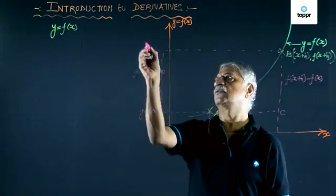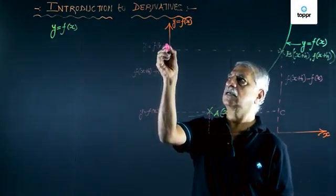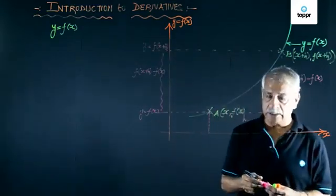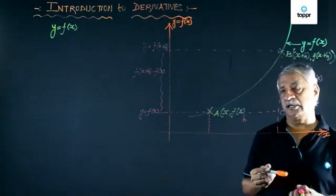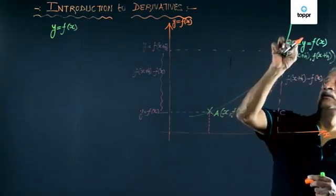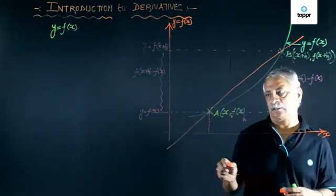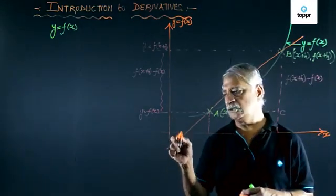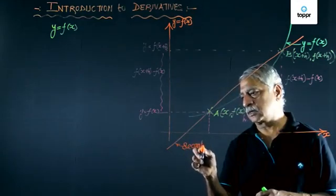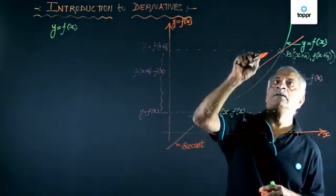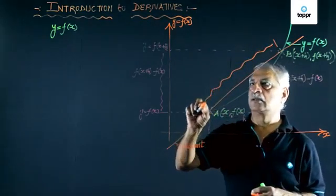Now let us join the line A, B. Then this line AB in geometry is defined as the secant, and AB is defined as chord.